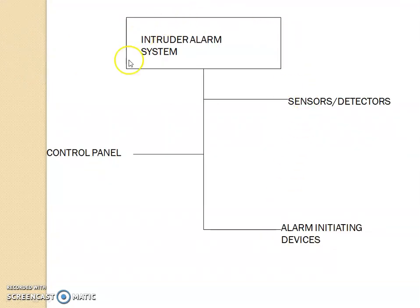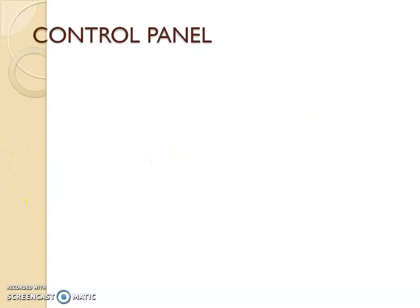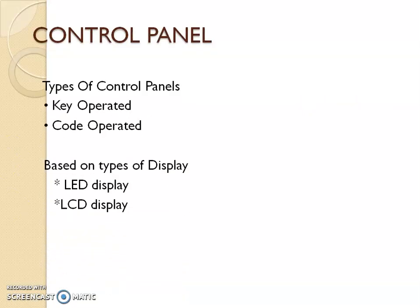Now, going back to sensors and detectors, we are going to look at the control panel. The control panel is an important device into which the detectors and sensors are connected. Not only that, the control panel gives instruction to the telephone dialer or gives instruction to an alarm device to initiate alarm activation.